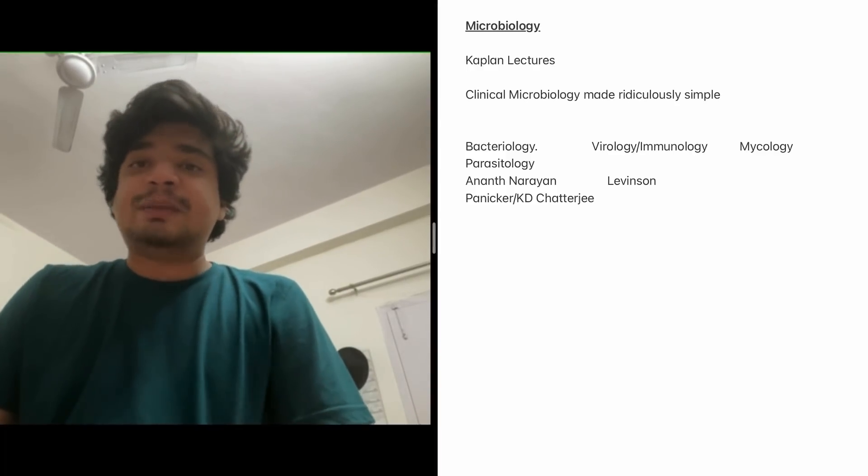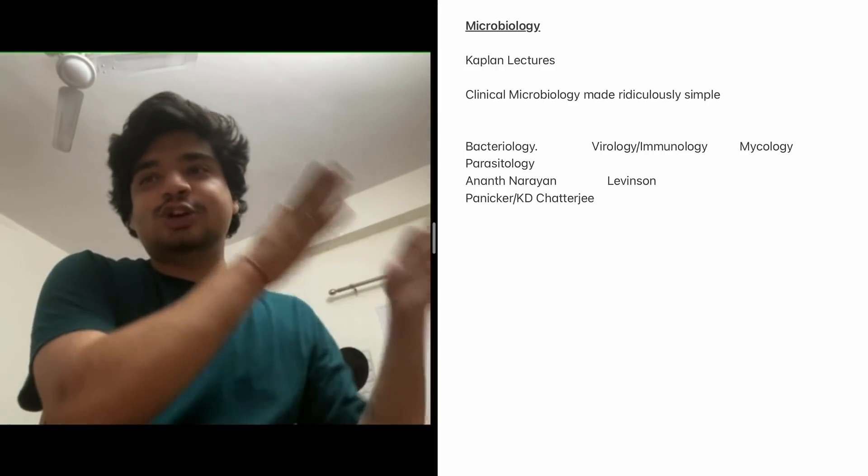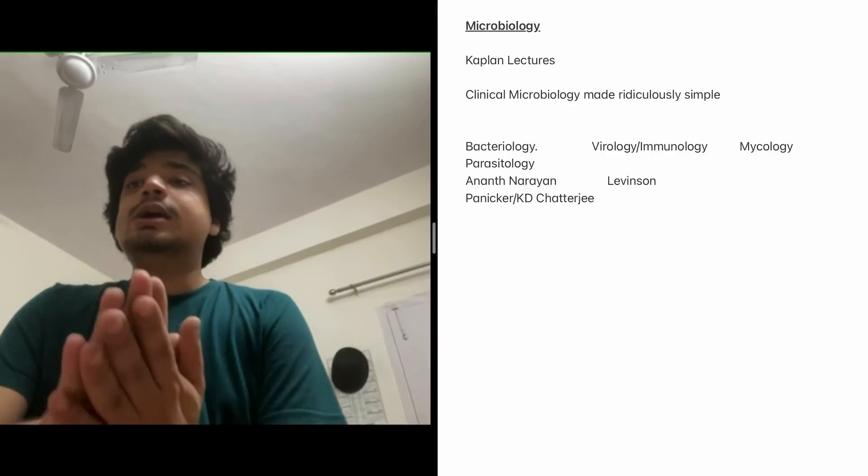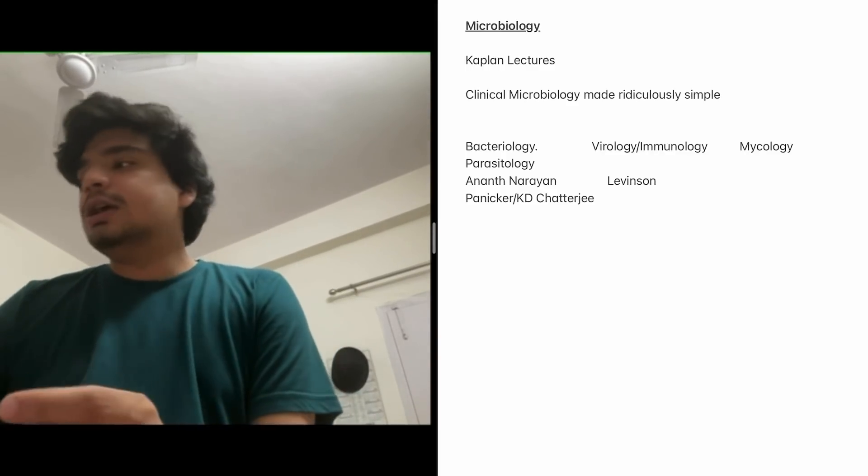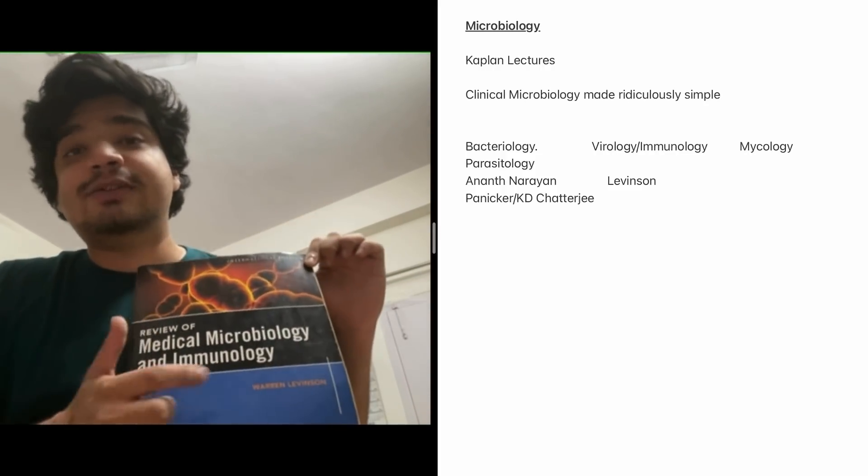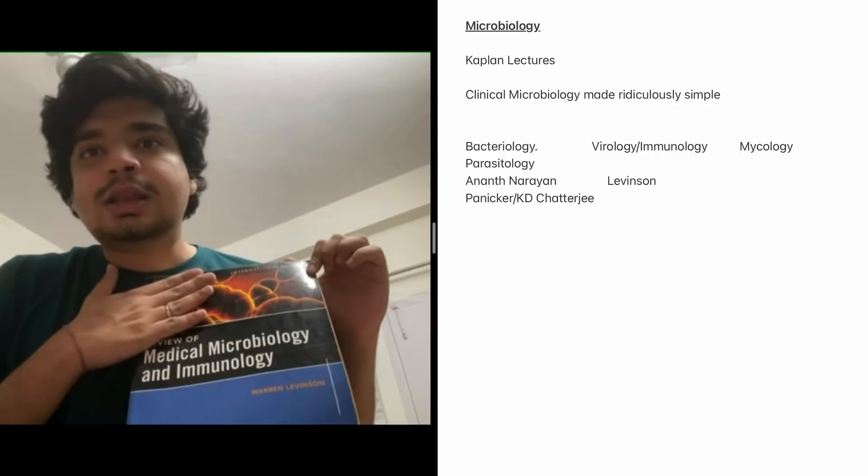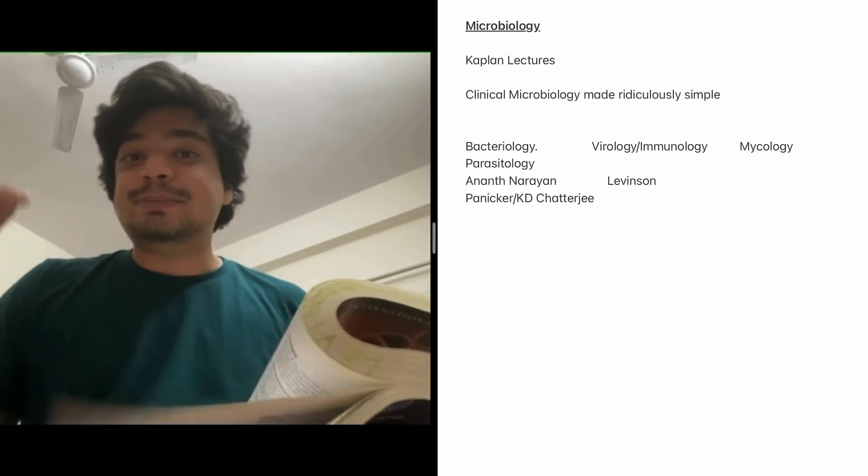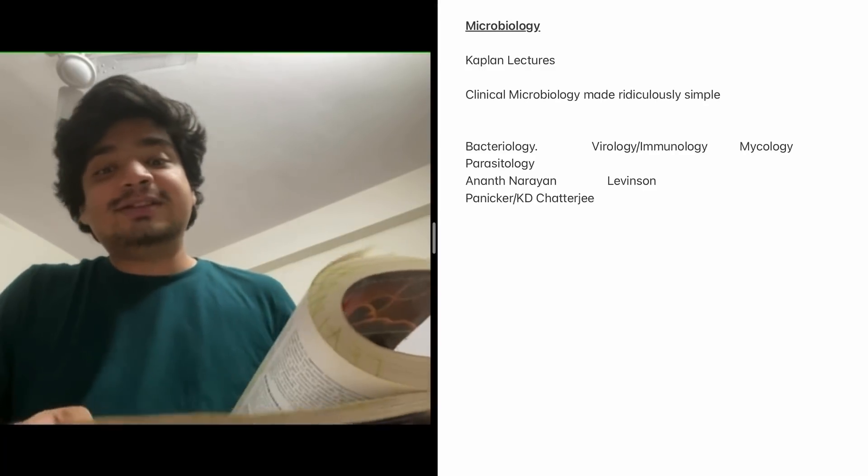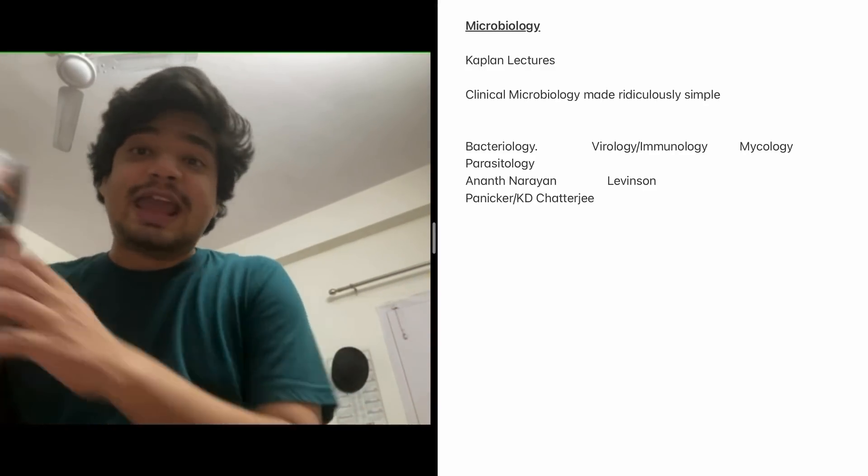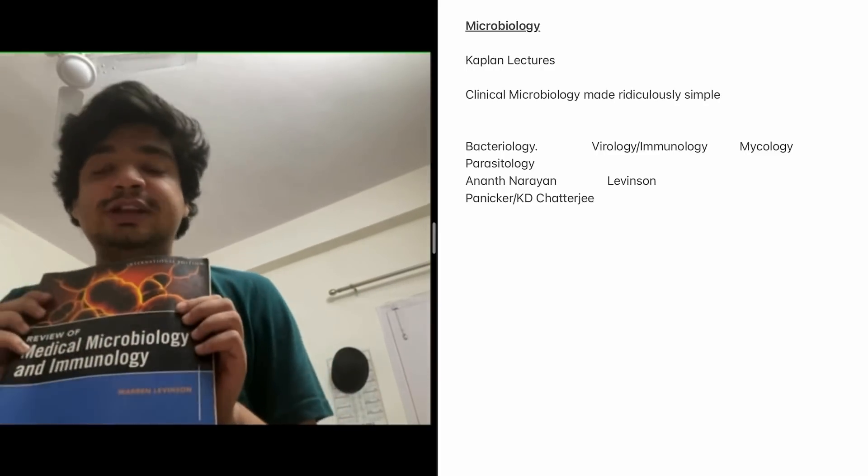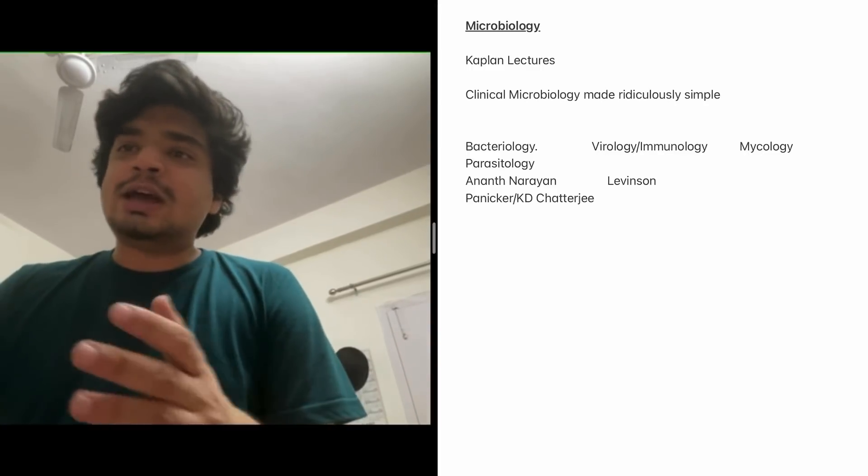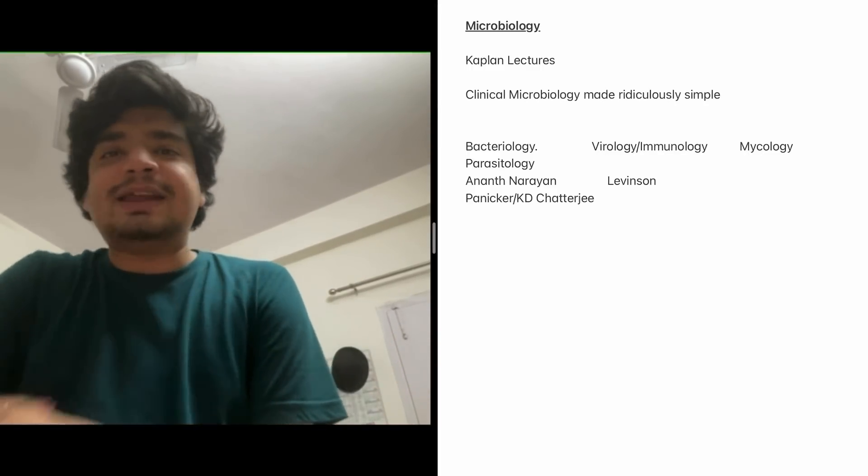I'm not vouching for it the way I'm vouching for Lionel Raymon lectures or Robbins Review - those are excellent. This is a plus-minus thing. You can love it or hate it. I used to like it. Similarly, you can do Kaplan lectures. Microbiology is essentially made up of four subjects: bacteriology, virology, mycology, and parasitology. For bacteriology, Ananthanarayan is an excellent book. Virology and immunology - you can use a PDF of Review of Medical Microbiology and Immunology by Levinson. This is followed by every AIMSonian. Virology is given excellently here.